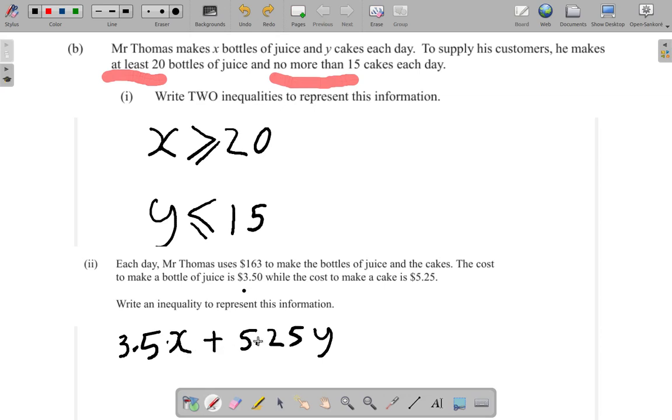So he makes $3.50 per juice multiplied by X juice, plus he spends $5.25 per cake multiplied by Y to make Y cakes, and that adds up to a total of 163.